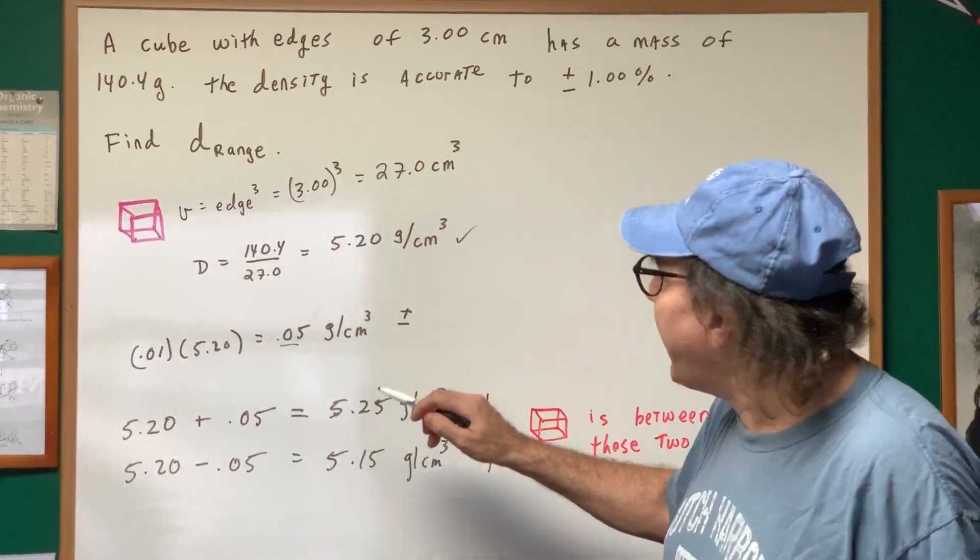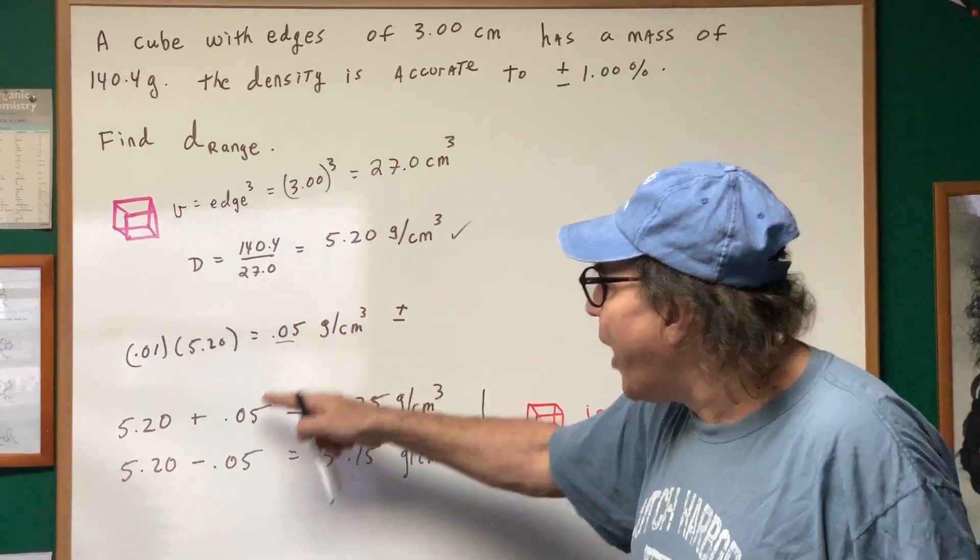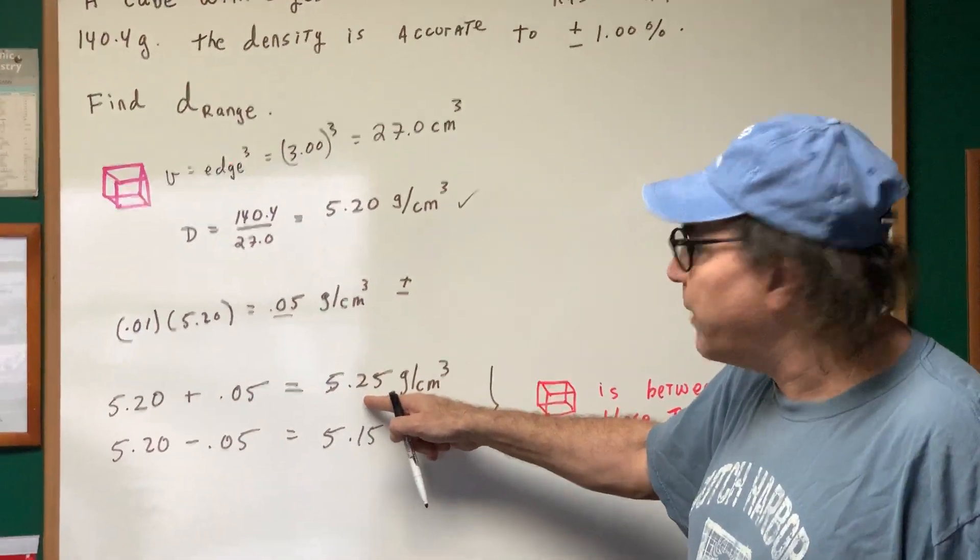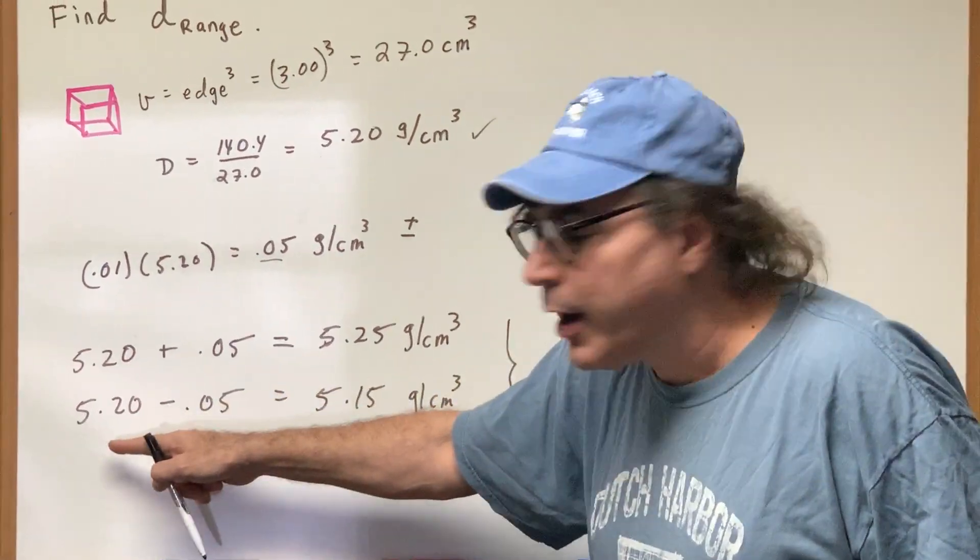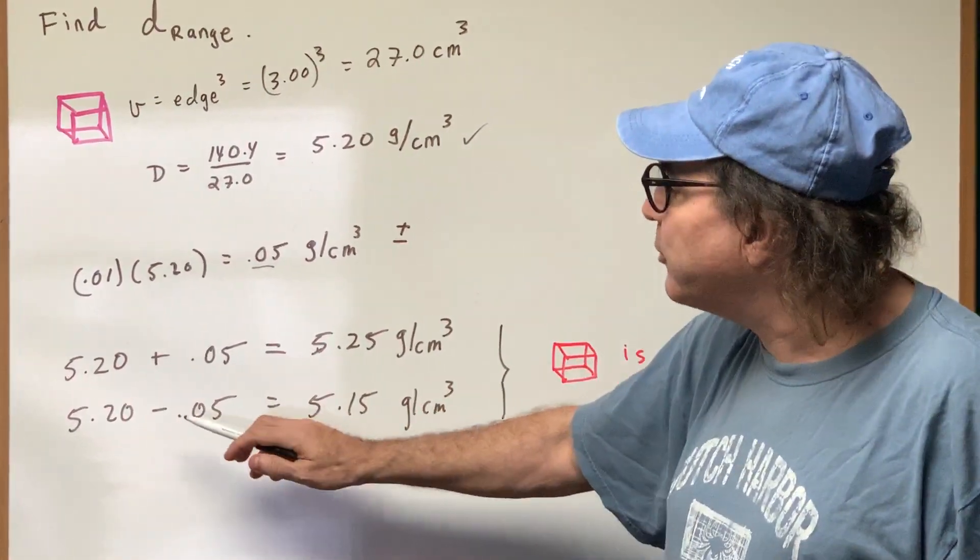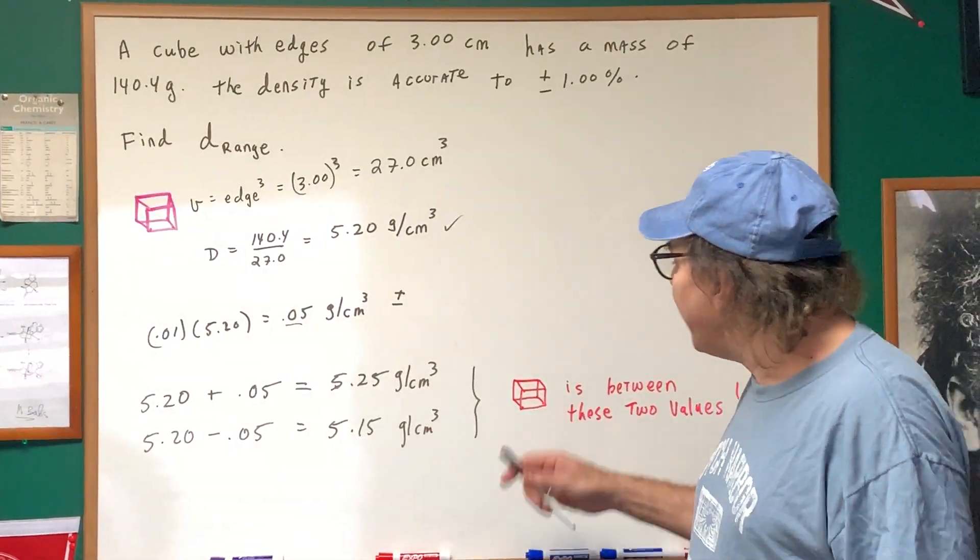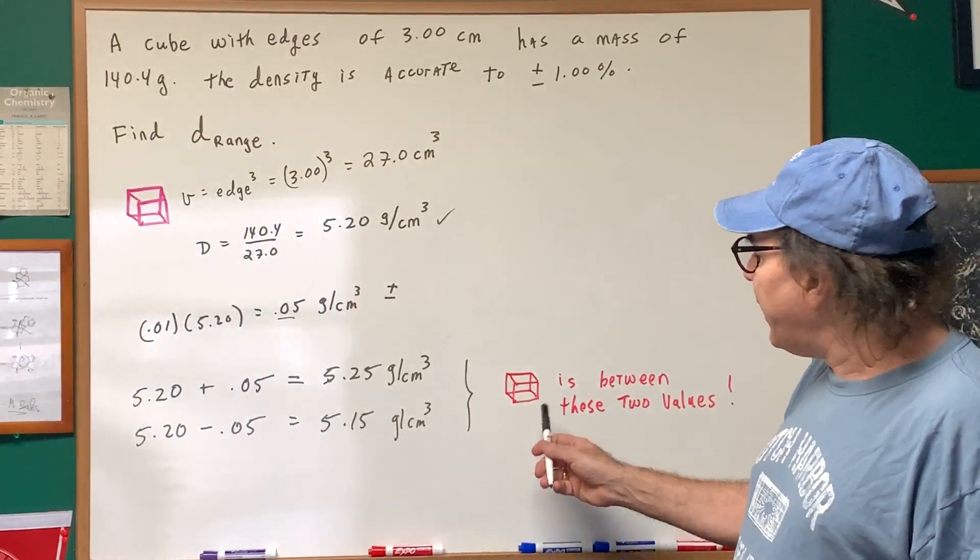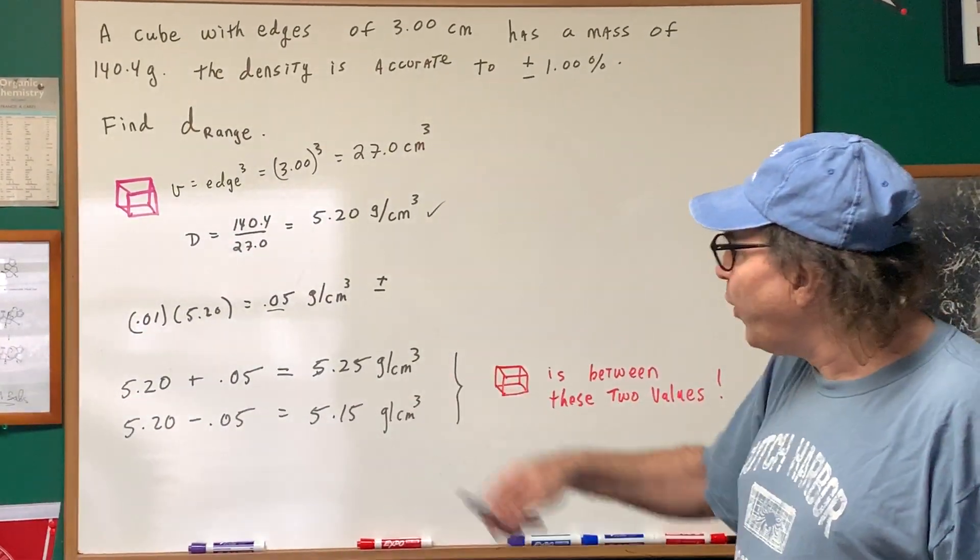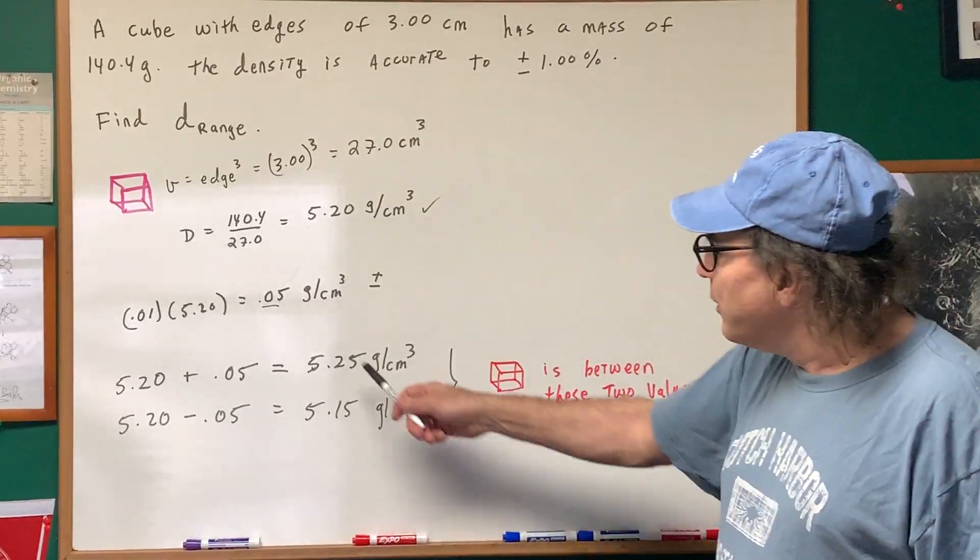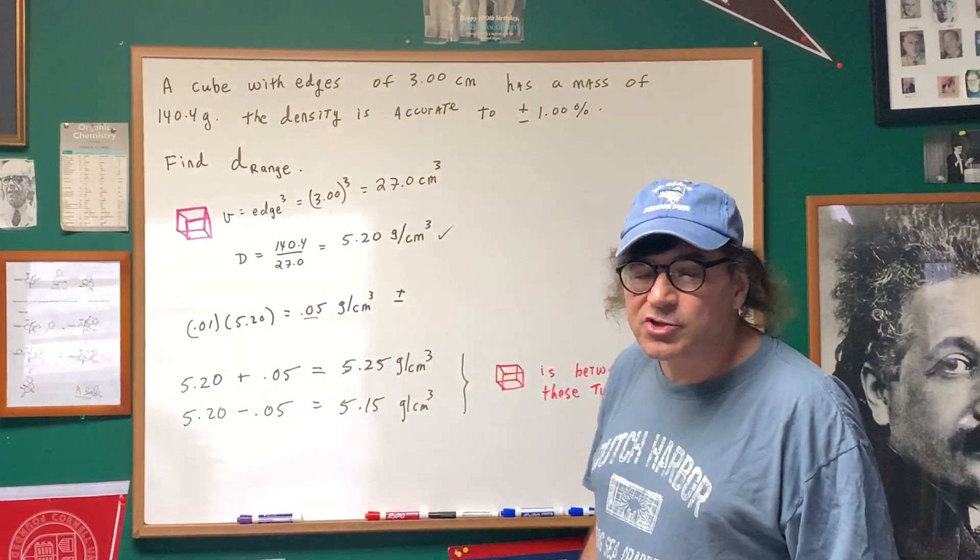What that means is that this number could be either plus 0.05, which means that the density could be 5.25 grams per centimeters cubed, or we subtract it from 5.20, and we get 5.15 grams per centimeters cubed. Thus, this density of this cube would be between these two values of 5.25 and 5.15 grams per centimeters cubed.